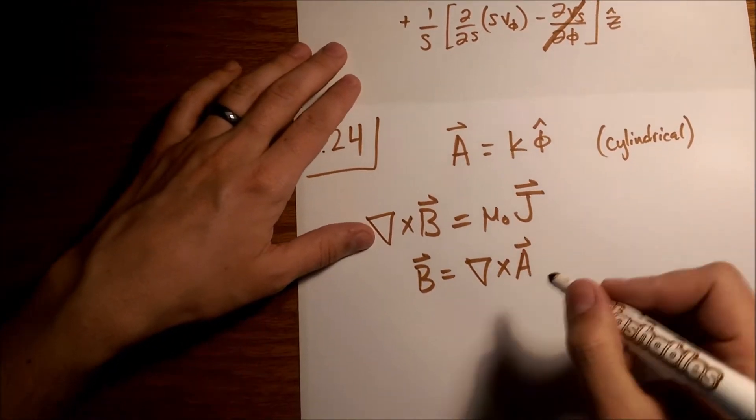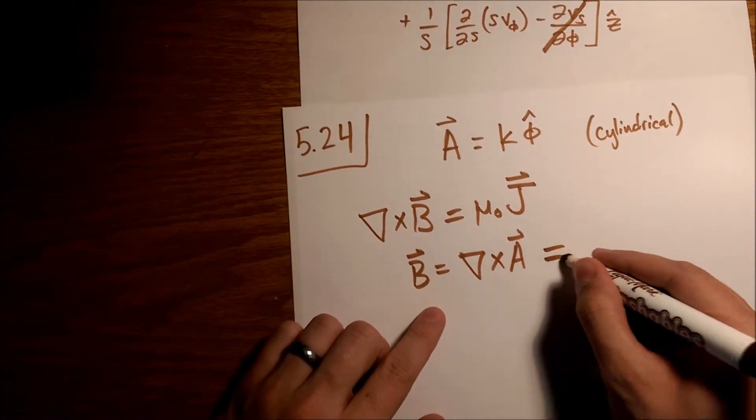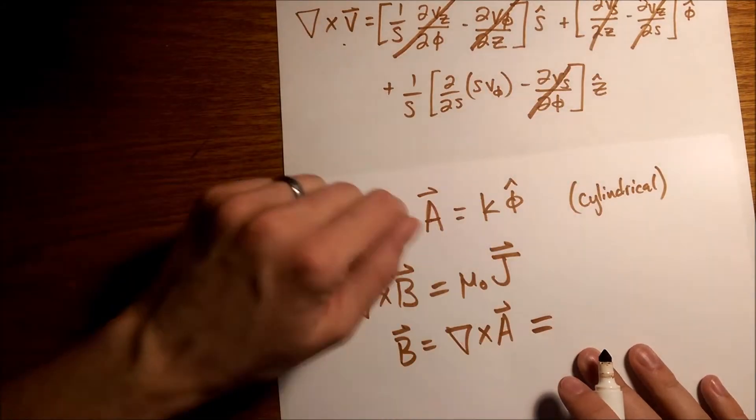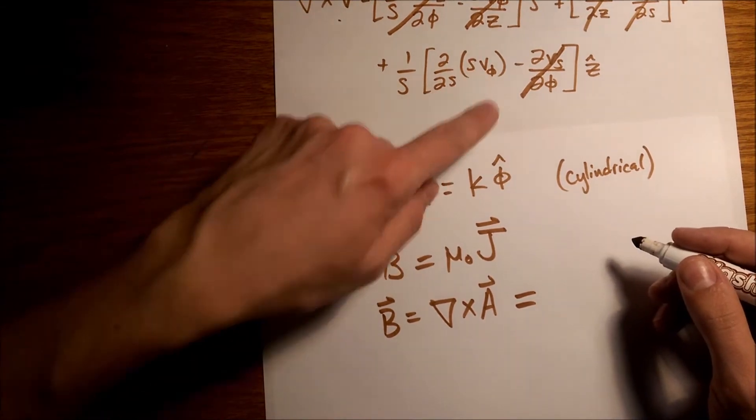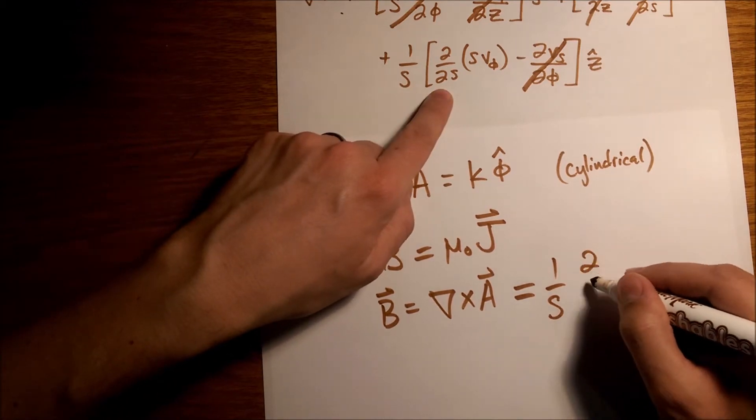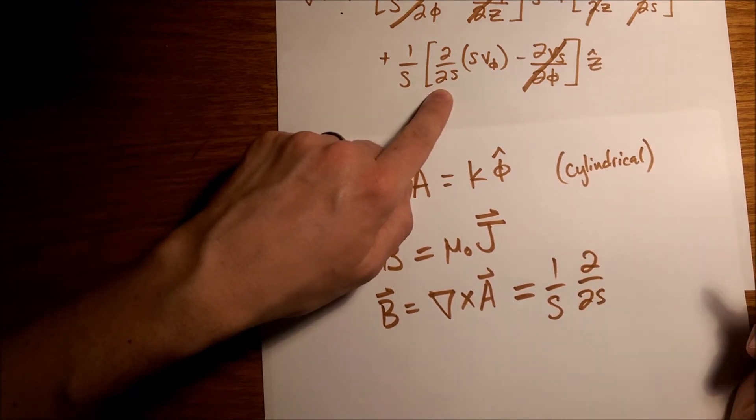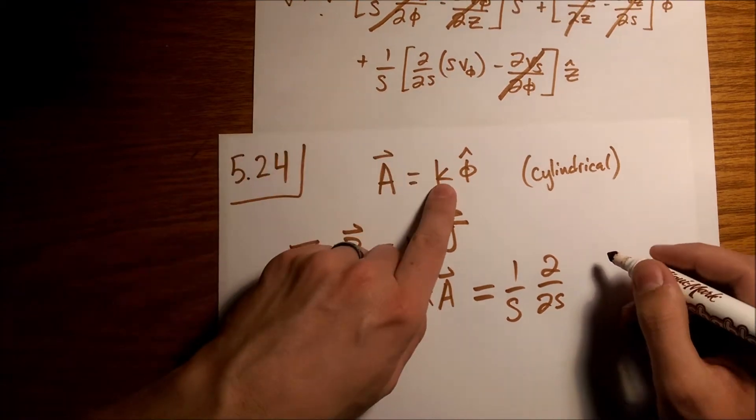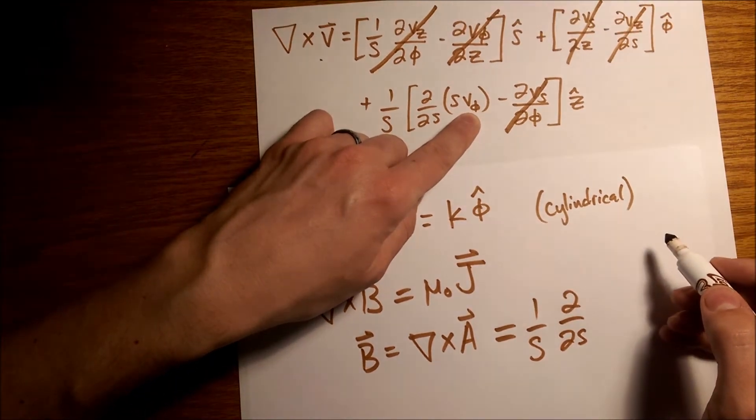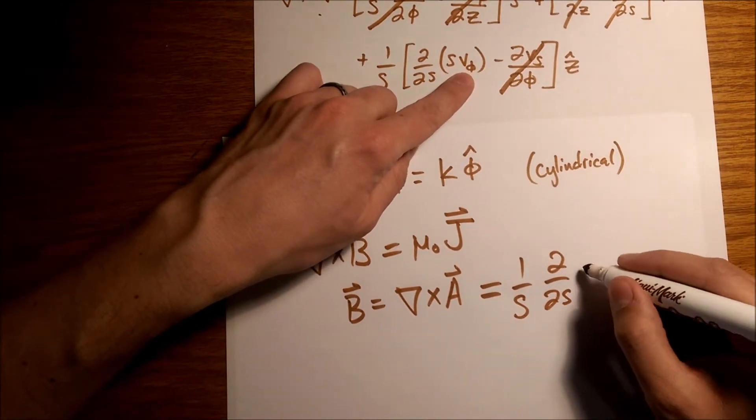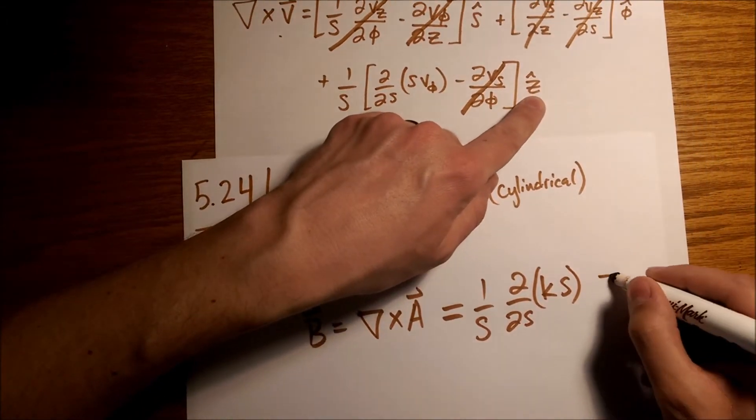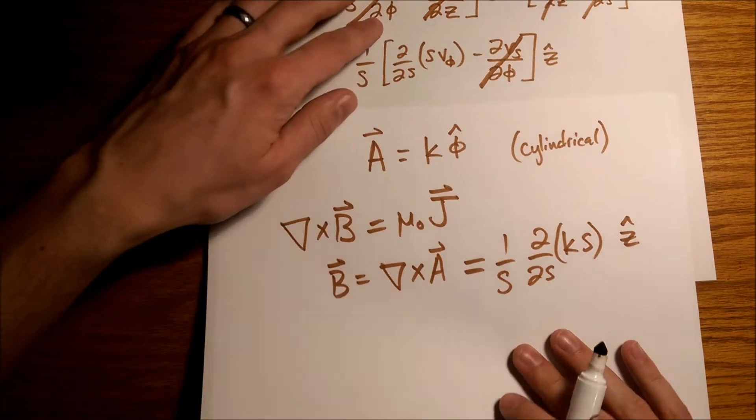So let's go ahead and write out this del cross A right here. So again, all these terms are going to go to 0 except for this one, s times k, let's just write this out, so 1 over s, and then we'll have a partial with respect to s, and then s times k, this k is this v sub v right here, so k s, this term right here.